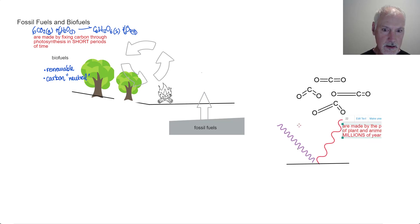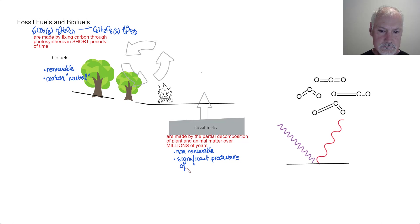But first, what are fossil fuels? Well, they're made by the partial decomposition of plant nanomaterial over millions of years, versus a short period of time for our biofuels. These particular fuels are non-renewable. What that means, essentially, is that they are consumed faster than they are made. And secondly, they are significant producers of greenhouse gases. And in particular, carbon dioxide.